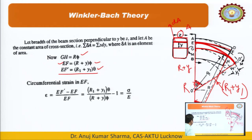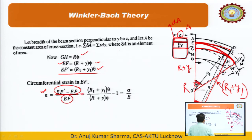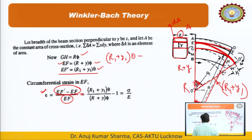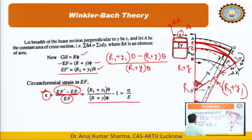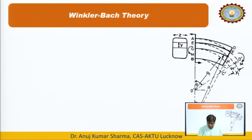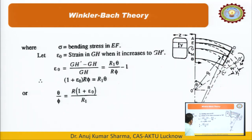To calculate the circumferential strain in fiber EF, strain ε = (EF′ − EF) / EF = [(R1 + Y1)θ − (R + y)φ] / [(R + y)φ] − 1. Also, ε = σ/E, where E is the modulus of elasticity and σ is the bending stress in fiber EF.